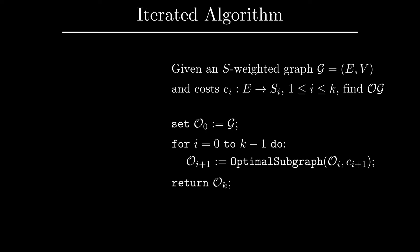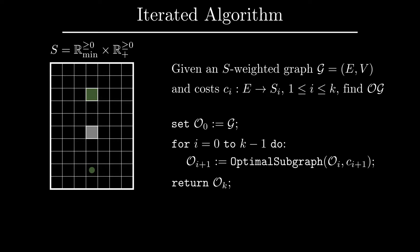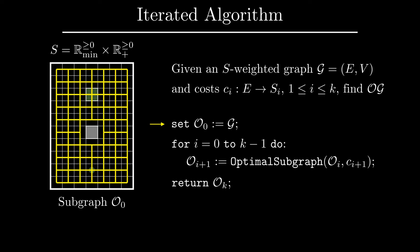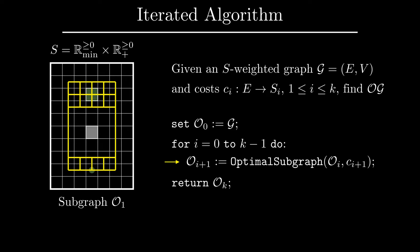Let us illustrate this on an example. In the grid familiar from the previous slides, we are looking for the shortest path among those that stay as far away from the obstacles as possible. Our multi-cost S is the Cartesian product of R_min with R_plus. The algorithm begins with the whole graph G, and at the first iteration, we find the optimal subgraph of G relative to the first coordinate of the multi-cost only. In other words, we find those paths that stay as far away from the boundary as possible, regardless of their length. This is the graph O_1.